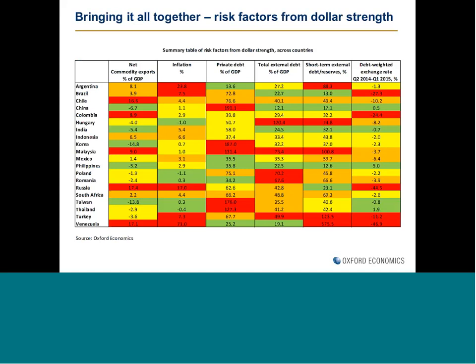Bringing it all together, we've built a big risk matrix for about 20 leading emerging markets. We look at all these different elements: commodity exports, overall private debt-to-GDP, external debt, short-term debt to reserves as a liquidity indicator, inflation — which is a measure of how much pressure there might be to force up domestic interest rates — and our debt-weighted exchange rate, which takes into account the share of different currencies in external debt. Putting all these indicators together, we give each country a score, where red chunks represent the most vulnerable countries and green the least vulnerable, with two intermediate groups in between.